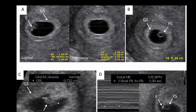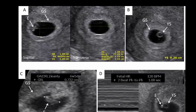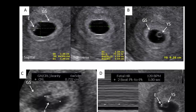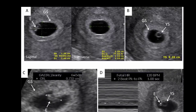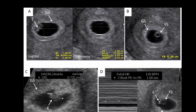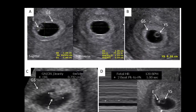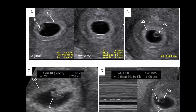The gestational sac, being a large cavity of fluid surrounding the embryo during early embryogenesis, consists of the extraembryonic coelom, also called the chorionic cavity.